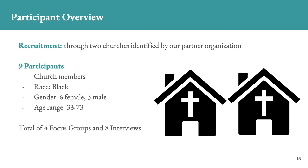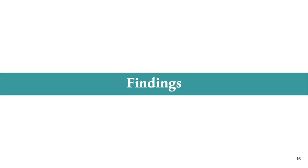Nine church members participated in the focus group sessions. All church members self-identified as Black; six were female and three were male. Participant ages ranged from 33 to 73. Data was collected in a total of four focus groups and eight interviews. For the sake of time, I will discuss our findings as they relate to crowdsourcing tasks and motivations. I invite you to check out our full paper for additional findings as they relate to types of support church members would like to receive and barriers to accessing this support.